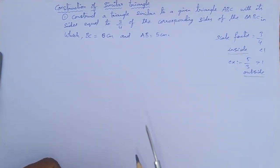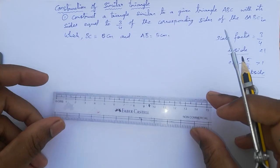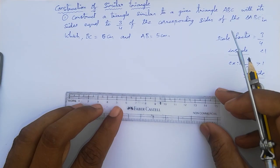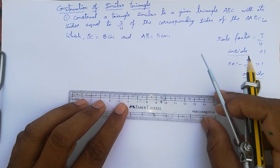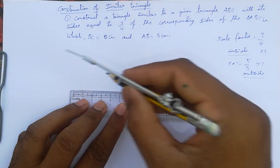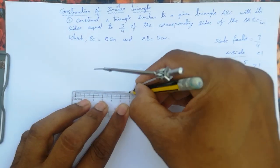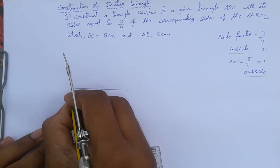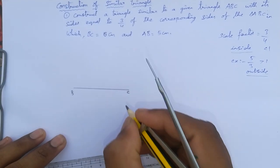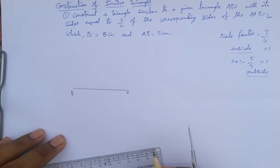First, take BC as 6 centimeters. Draw a line segment BC of 6 centimeters. Now AB is 5 centimeters.